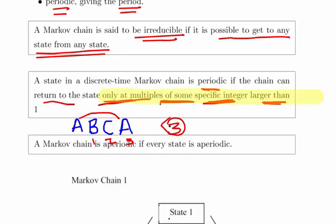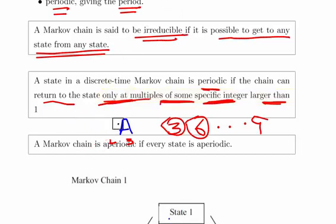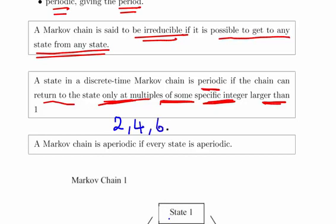It might take six phases to get back to A, and then nine and twelve and so on. Essentially it is periodic with period three. To return back we could have multiples of two: two, four, six, eight. We could have multiples of three: three, six, nine, twelve, and so on.